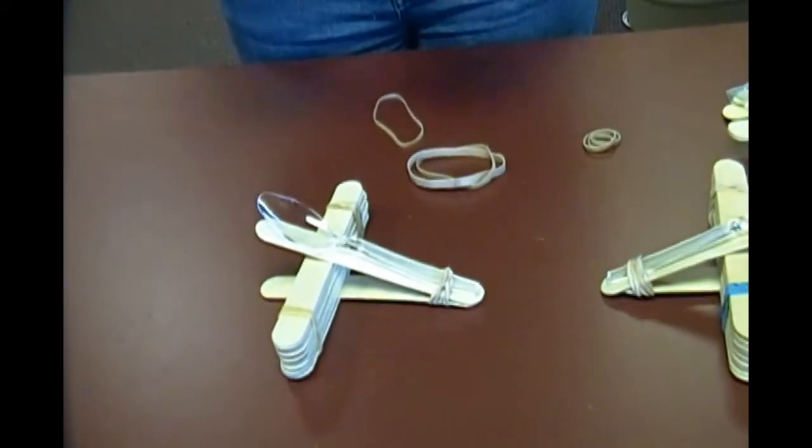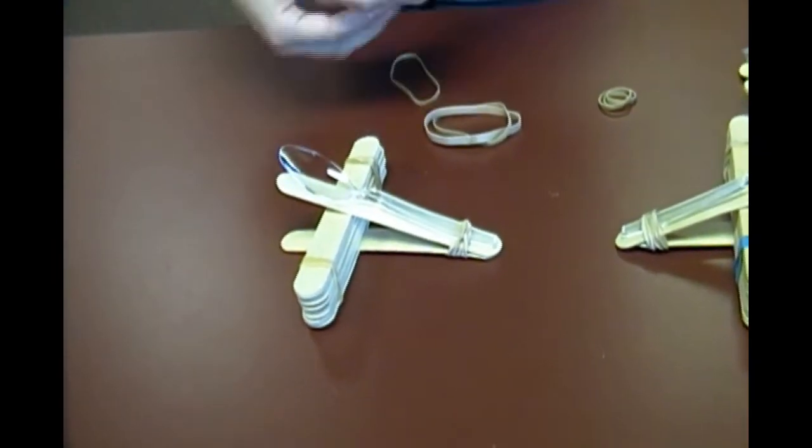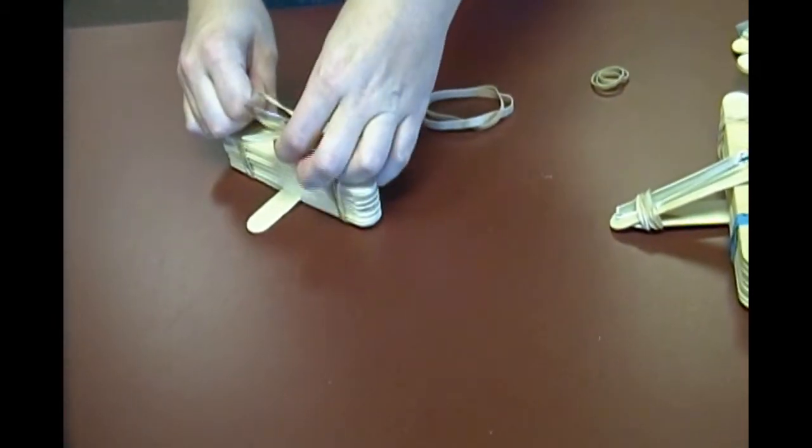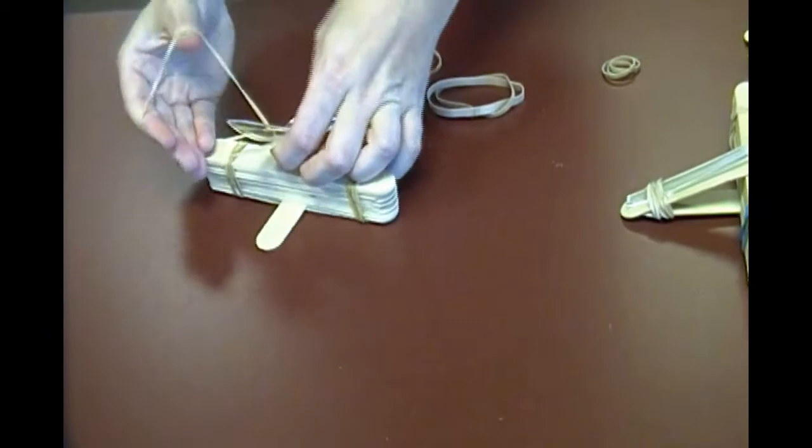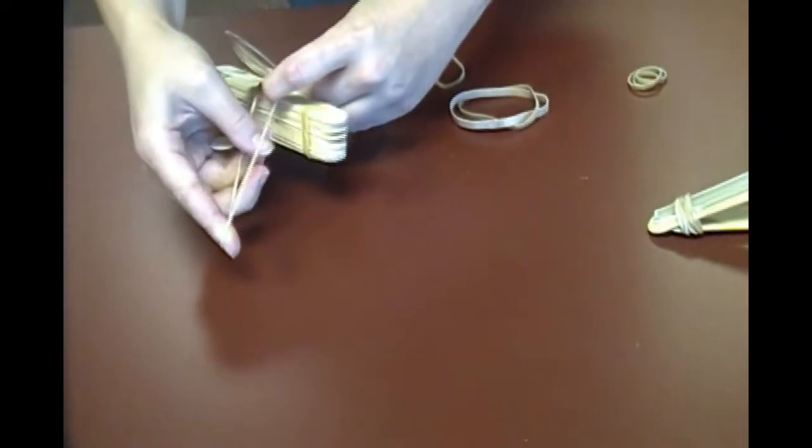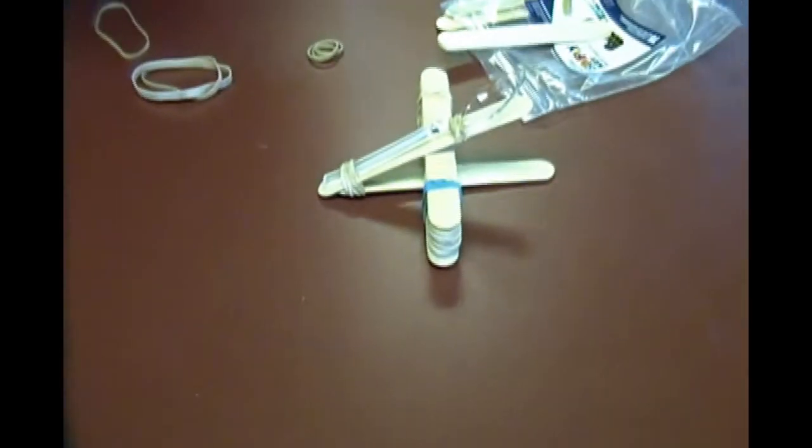And then we're going to use one more rubber band to hold the spoon on at the top so it doesn't flip up like this. This is a really stretchy rubber band. I'm going to have to wrap it around there a lot of times. Four, five, six times. And there you go.